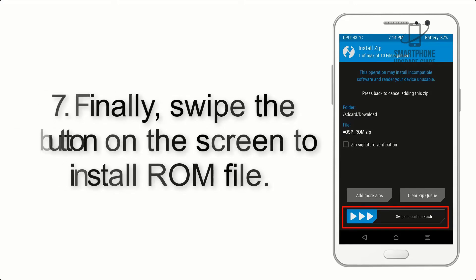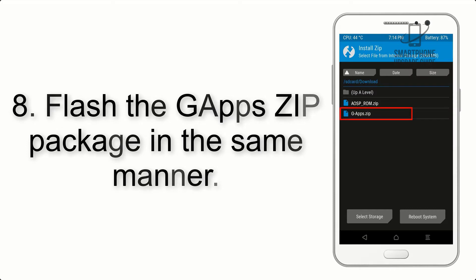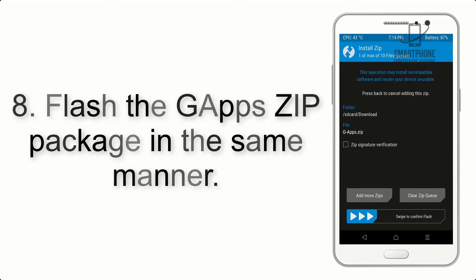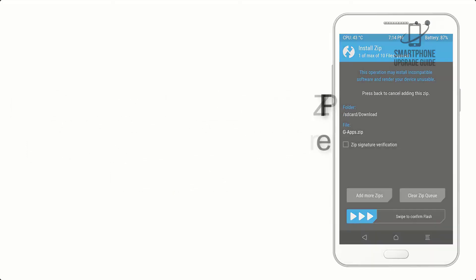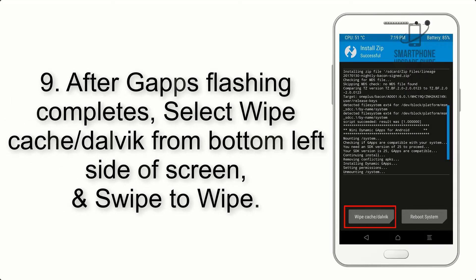Step 7: Finally, swipe the button on the screen to install the ROM file. Step 8: Flash the GApps zip package in the same manner.